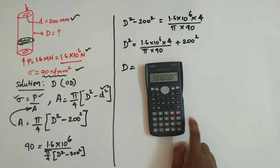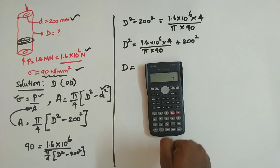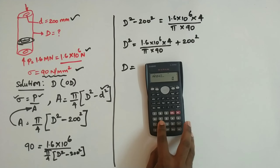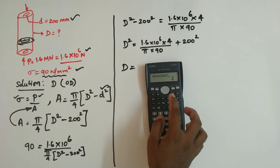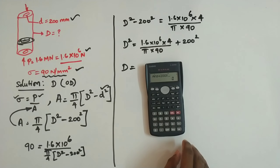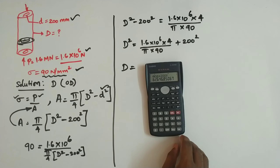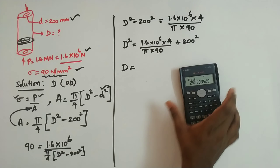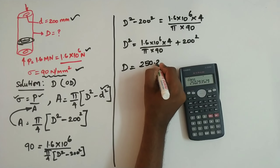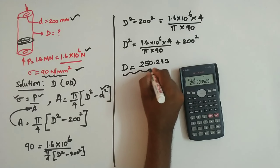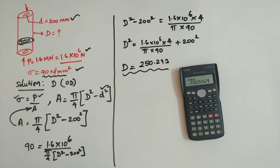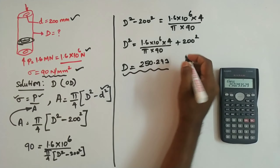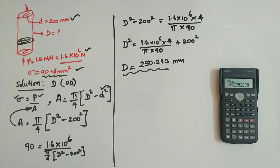Evaluate 1.6 into 10 to the power 6 into 4 divided by 3.14 into 90, store the answer, then add 200 squared and store that value. Now take the square root of the stored memory value. The result is 250.293 mm — this is our external diameter.